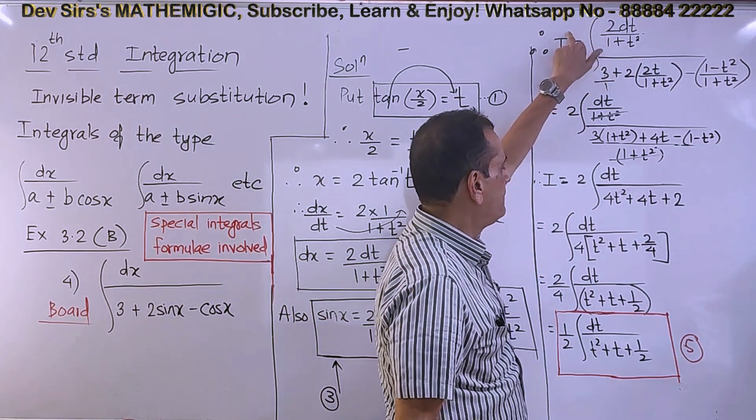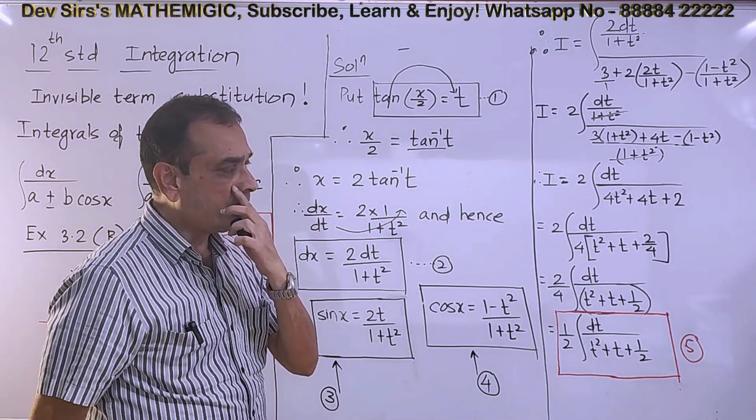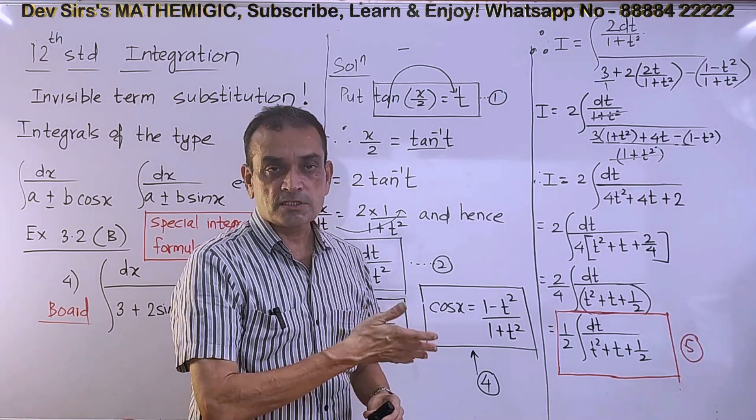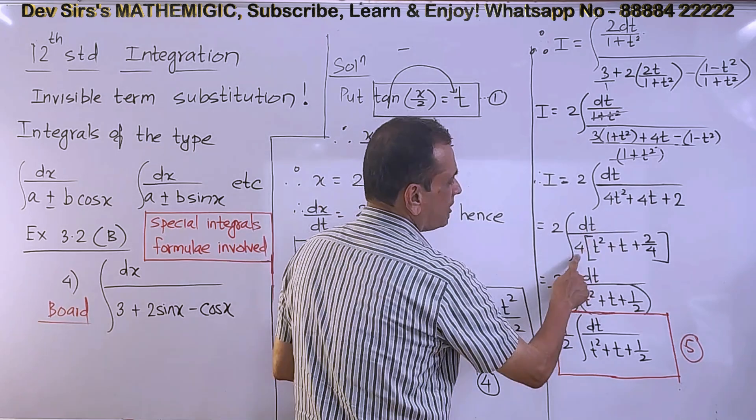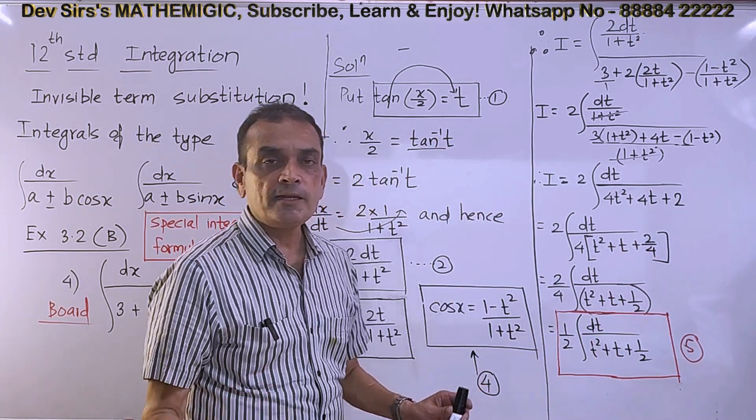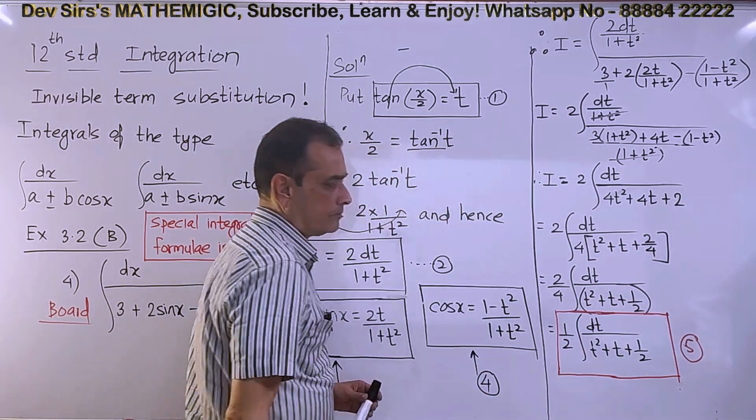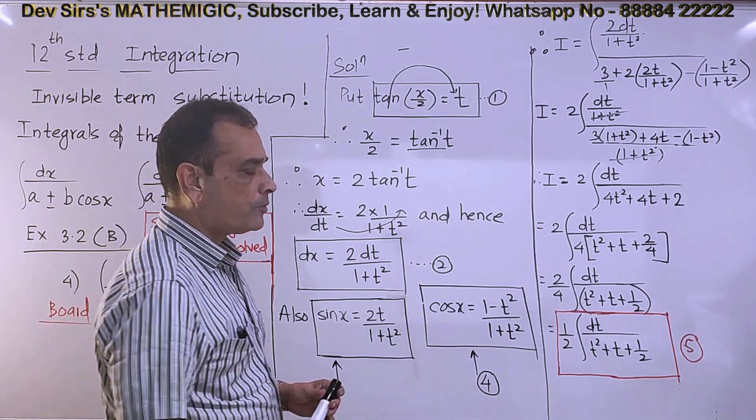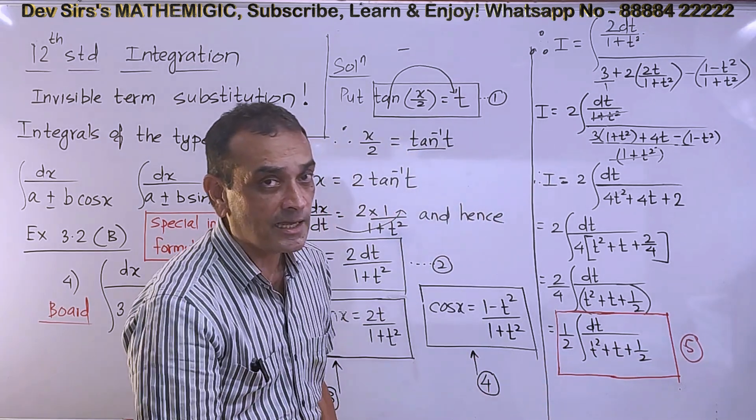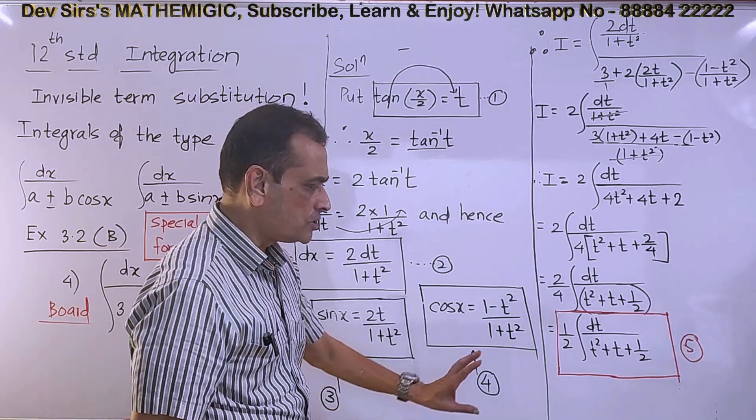Now 2 is outside from the numerator. I have taken 4 also outside from the denominator. Remember the basic rule: coefficient of t² should be 1 for this special type of integral. Taking 4 outside, inside we get t², then 4t becomes just t, and 2/4 becomes 1/2. When you take any number outside the bracket, inside you divide by that same number.